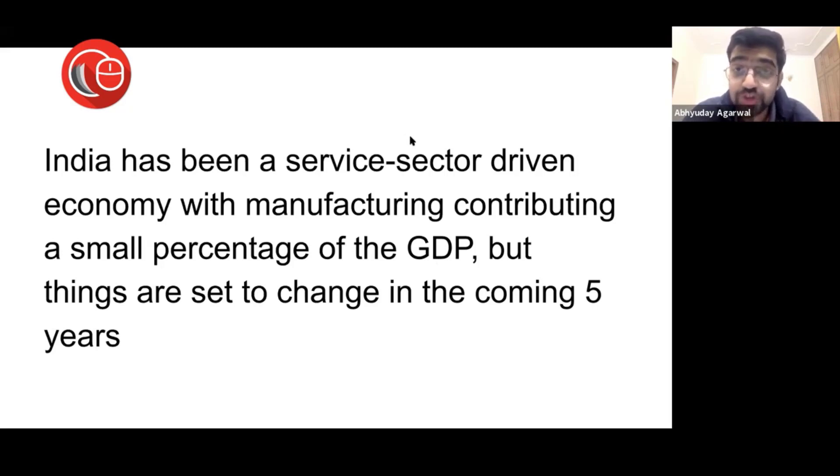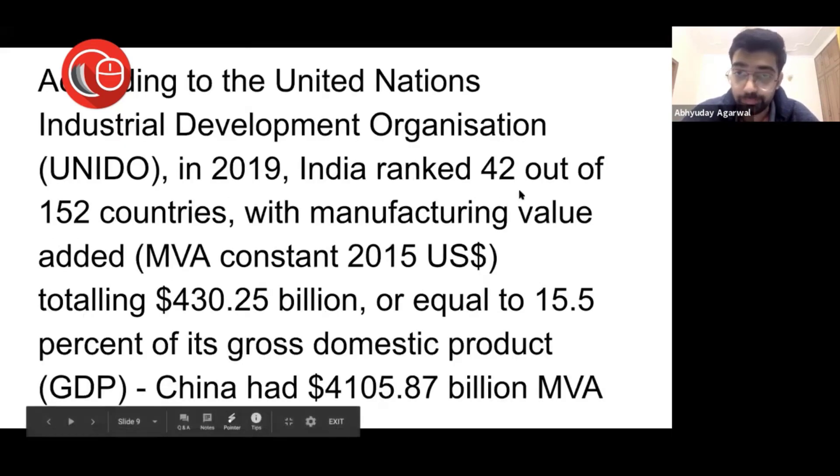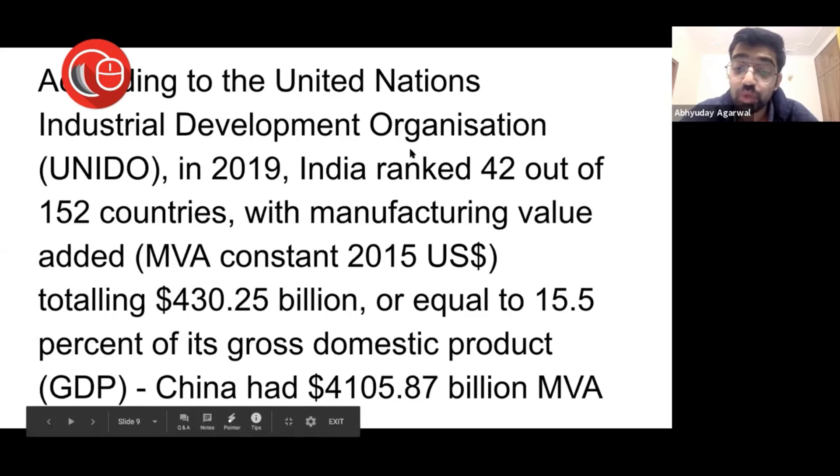Why are things set to change? In 2019, India was ranked by the United Nations Industrial Development Organization as 42nd, and our manufacturing value-added was not very high—$430 billion. This is one-tenth of China, which had $4 trillion, which was about 28% of China's GDP.